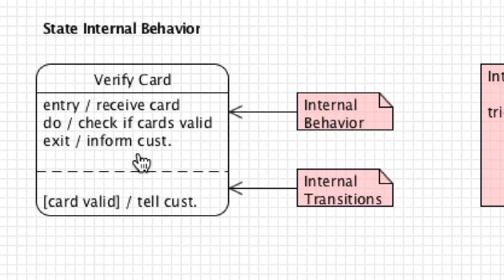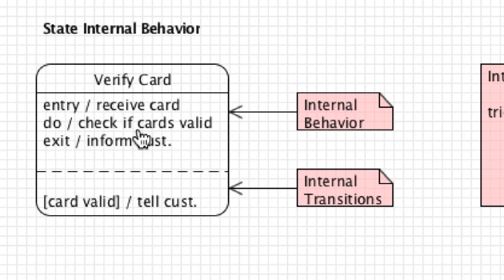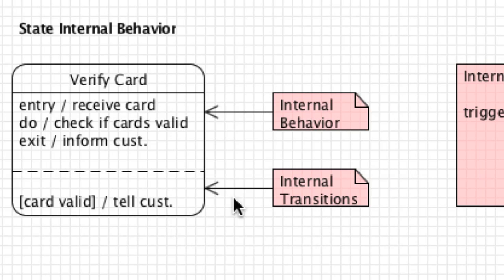Internal transitions are actions performed while you are currently in the state. In this example we tell the customer if the card is valid or not, using the same trigger-guard-behavior format: the trigger is finding out the card is valid or invalid, the guard comes back as true or false, and then the behavior tells the customer whether the card is valid.